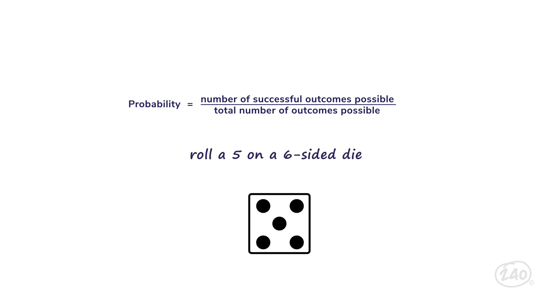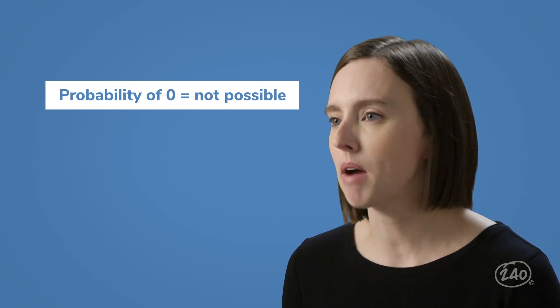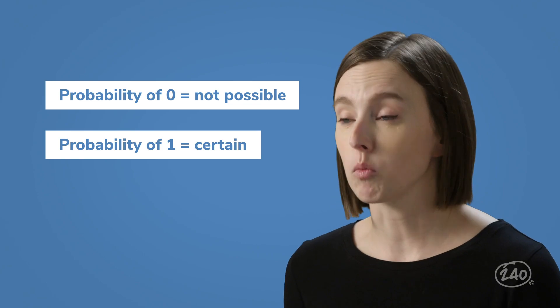Think about trying to roll a five on a six-sided die. There's only one way to have a successful outcome, rolling a five. But there are six possible outcomes. So the probability of rolling a five is one out of six, or one sixth. All probabilities fall in between zero and one. Zero means the outcome you're looking at is impossible, and one means it's certain. So a probability of one sixth is pretty low.